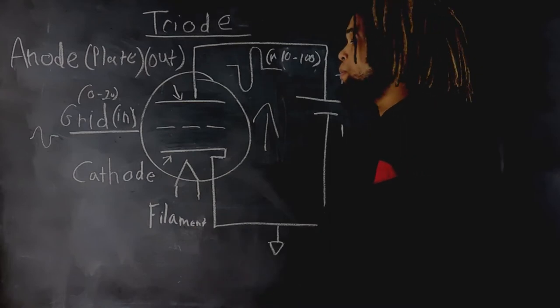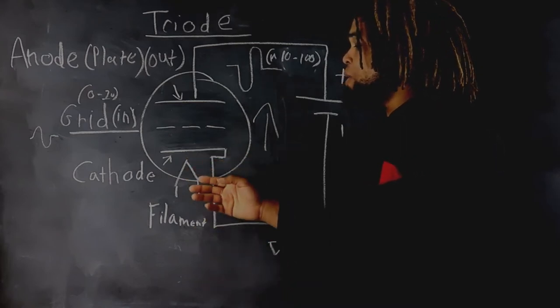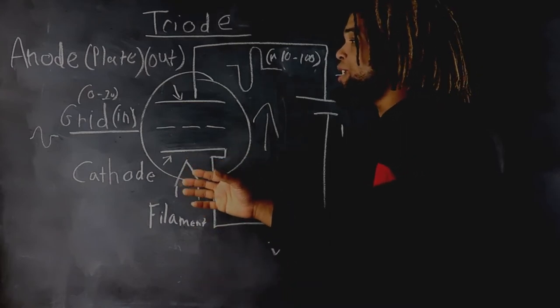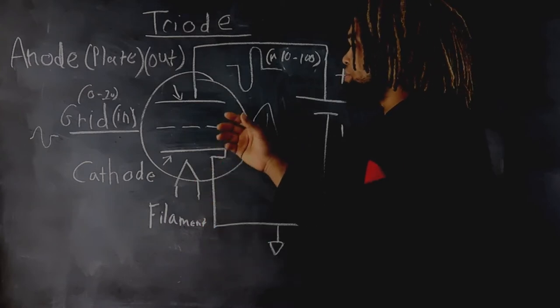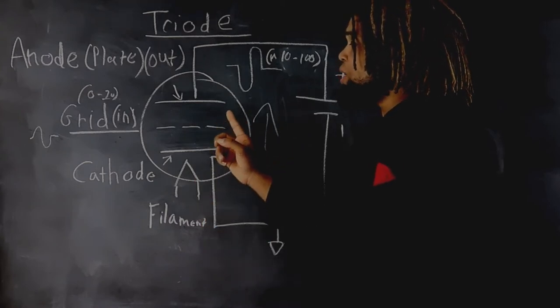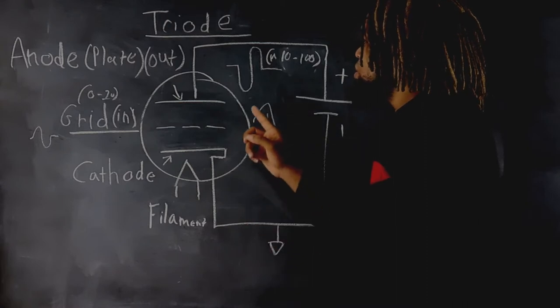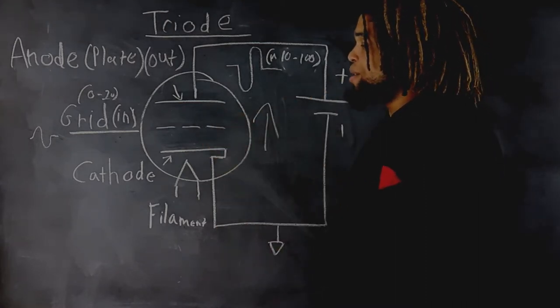These negatively charged electrons that are created in abundance due to the heat of the filament naturally want to flow to the positively charged plate, or anode.